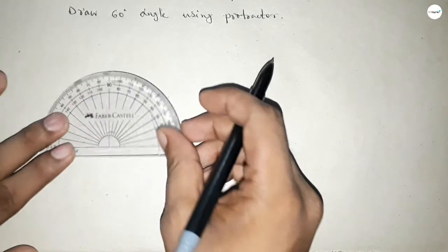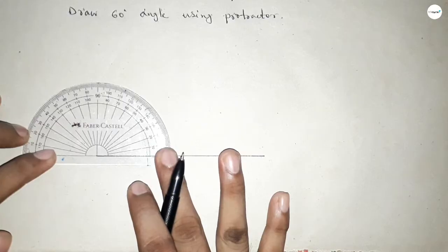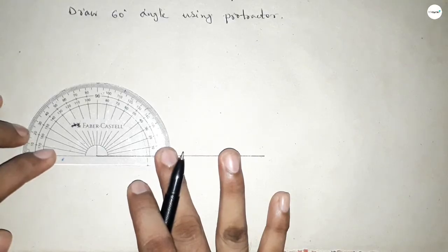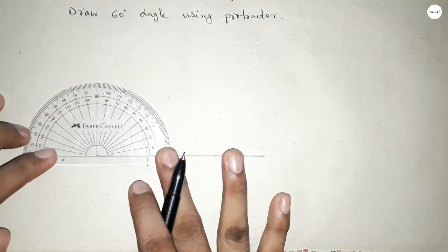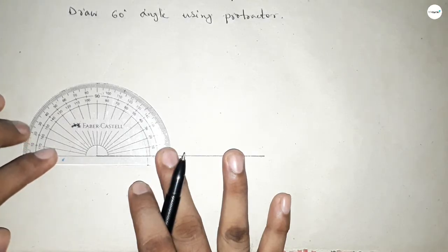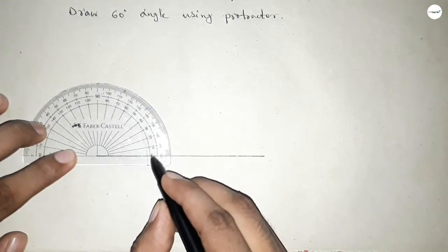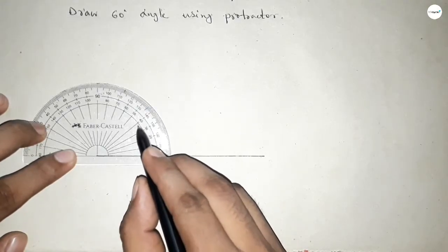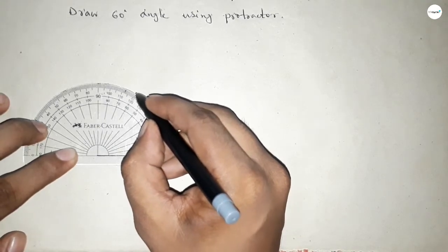Putting the protractor on the line perfectly. Next we have to count the angle. So this is 0, 10, 20, 30, 40, 50, and this side this is 60. So this is 60 degrees.